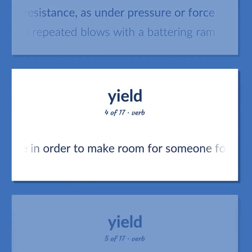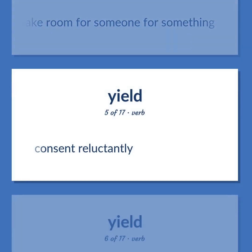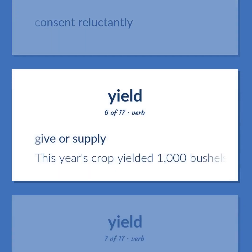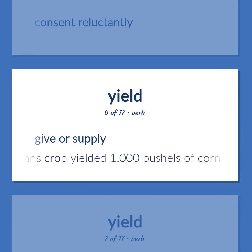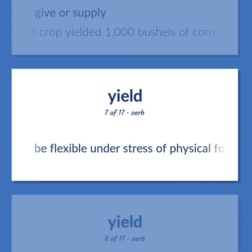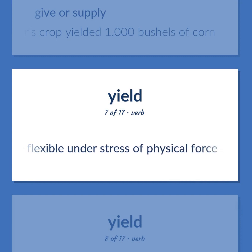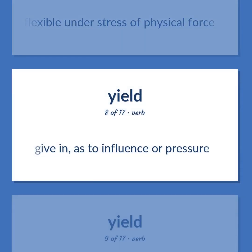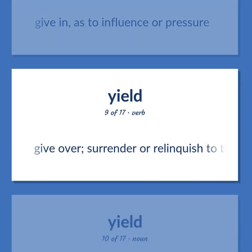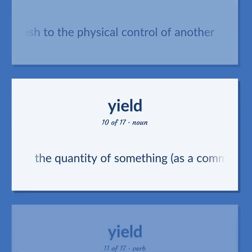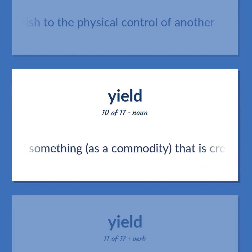Move in order to make room for someone or something. Consent reluctantly. Give or supply. This year's crop yielded 1,000 bushels of corn. Be flexible under stress of physical force. Give in, as to influence or pressure. Give over; surrender or relinquish to the physical control of another. The quantity of something, as a commodity, that is created, usually within a given period of time.